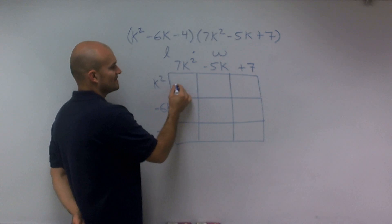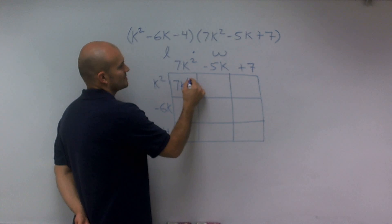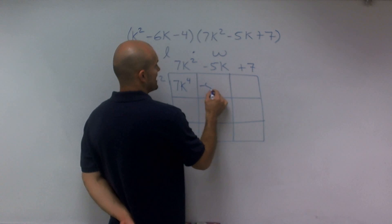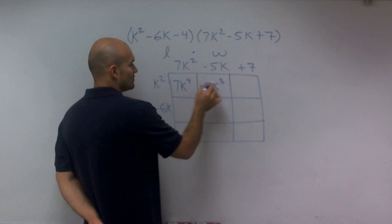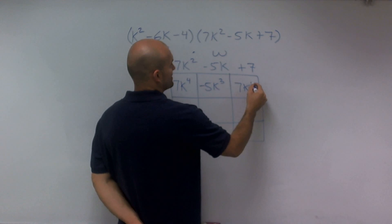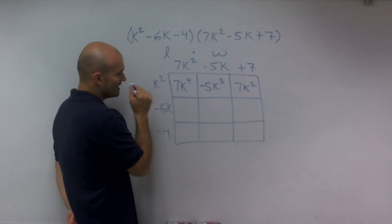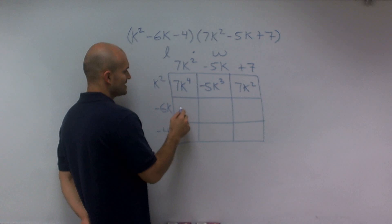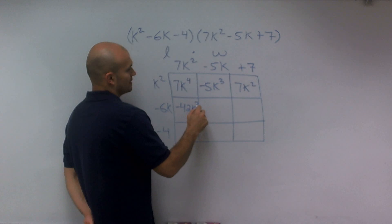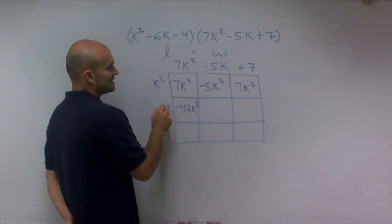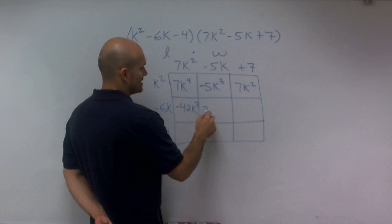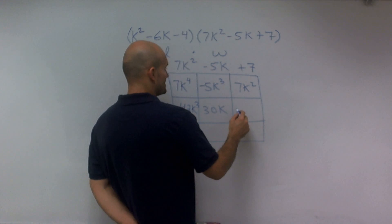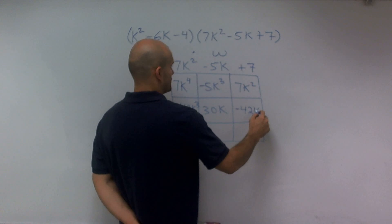So k squared times 7k is 7k to the fourth. K squared times negative 5k is negative 5k cubed. K squared times 7 is 7k squared. Negative 6k times 7k squared is negative 42k cubed. Negative 6k times negative 5k is 30k squared. Negative 6k times positive 7 is negative 42k.